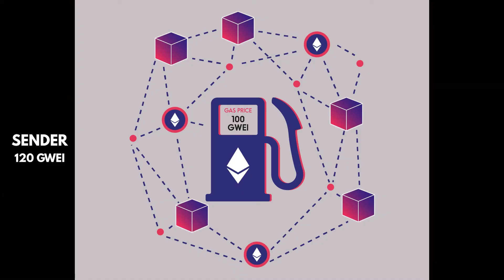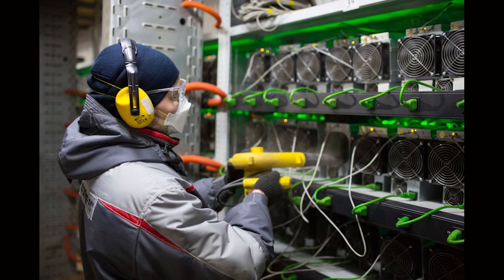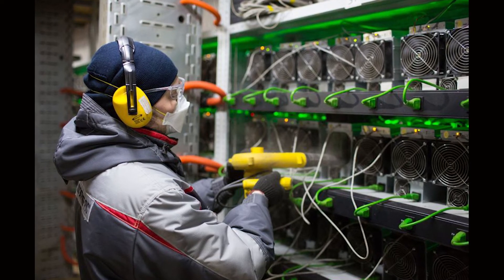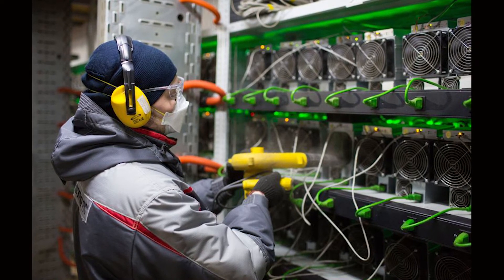Please note: when a given transaction's gas limit is not reached, any excess gas is returned to the sender. Conversely, the sender does not get their gas back when they set the gas limit too low. In this situation, an Ethereum miner will complete the transaction until the gas limit is used up. The transaction will be recorded on the Ethereum blockchain as failed. The miner keeps the fees as compensation for allocating their resources, and the sender will get back the amount they were wanting to transact.